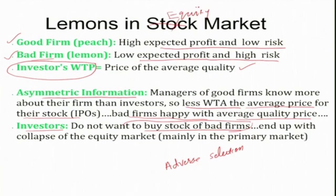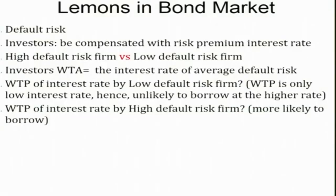Investors do not want to buy stock of bad firms — they want to earn dividends and capital gains. So the equity market ends up over-represented by bad firms. This is adverse selection in the equity market, ultimately leading to the collapse of the equity market. In the next session we will continue this discussion and apply the lemons concept to bond markets as well.